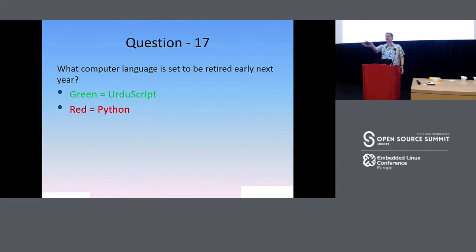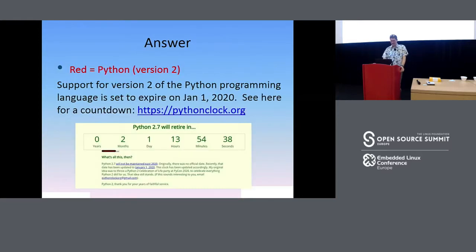Wait, you guys aren't playing. You're confusing me. The answer is Python. Python 2.7. Support for the Python 2 programming language is going away on January 1st, which means, oddly enough, that Urdu script will be better supported than Python 2 in January. I think we're down to three. Go ahead and come on up, people who are still standing.